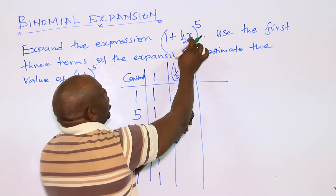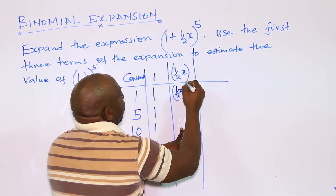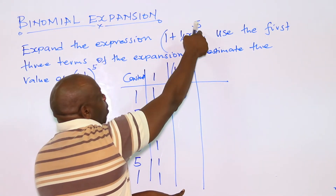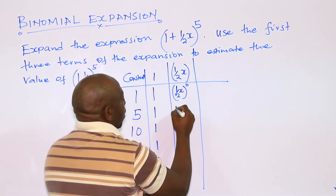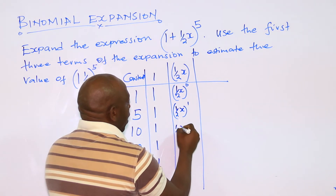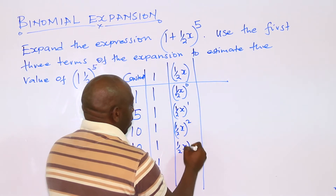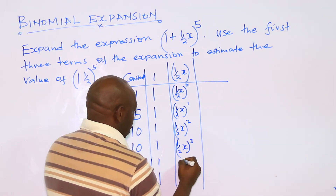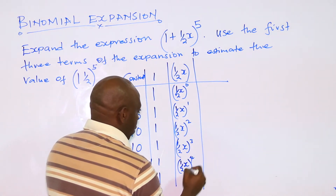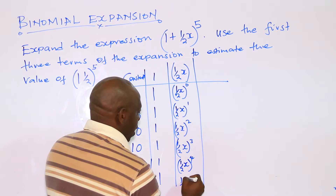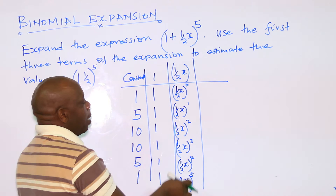The second term, which is ½x, starts from power 0 going all the way up to power 5: (½x)⁰, (½x)¹, (½x)², (½x)³, (½x)⁴, (½x)⁵. Remember to bracket this term.